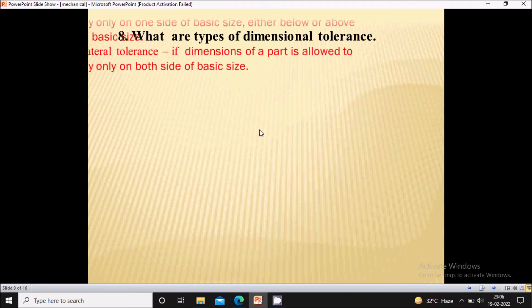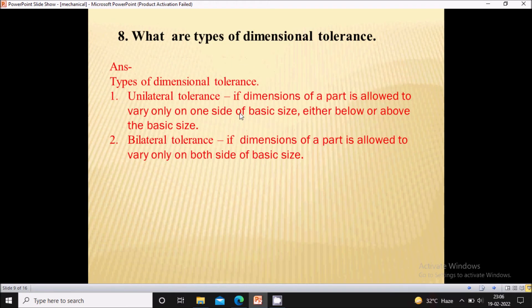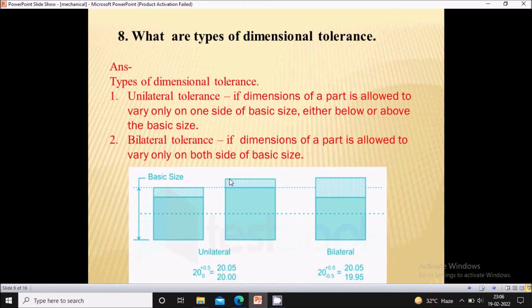What are the types of dimensional tolerance? So here there are two types of dimensional tolerance. First one is the unilateral tolerance, second one is the bilateral tolerance. If the dimension of the part is allowed to vary only on one side of the basic size means either below or above the basic size, then it is called as unilateral tolerance.